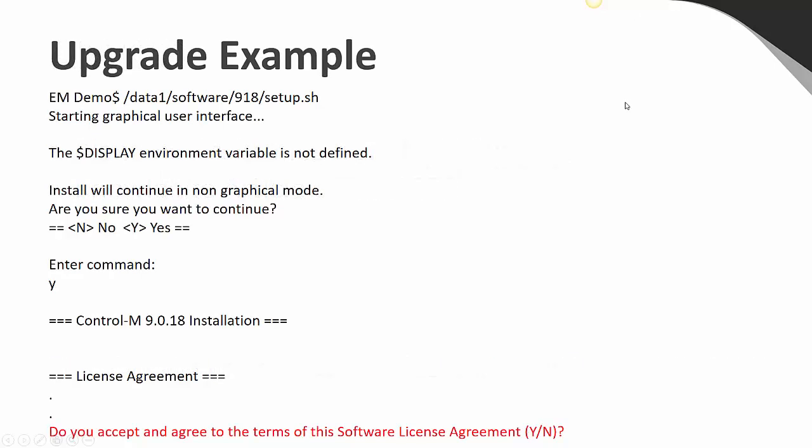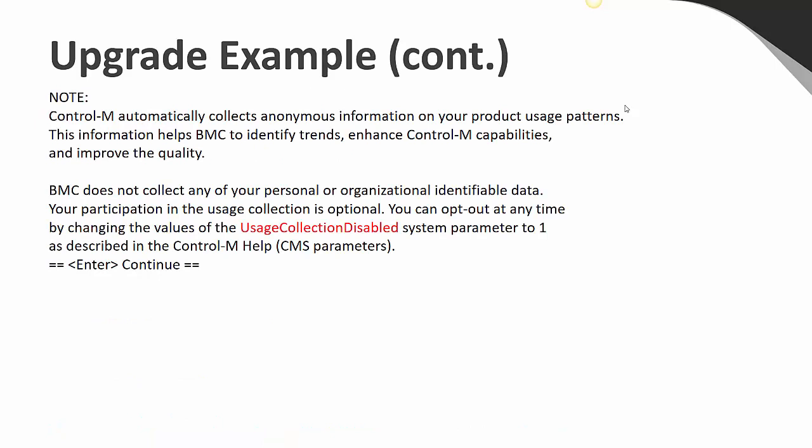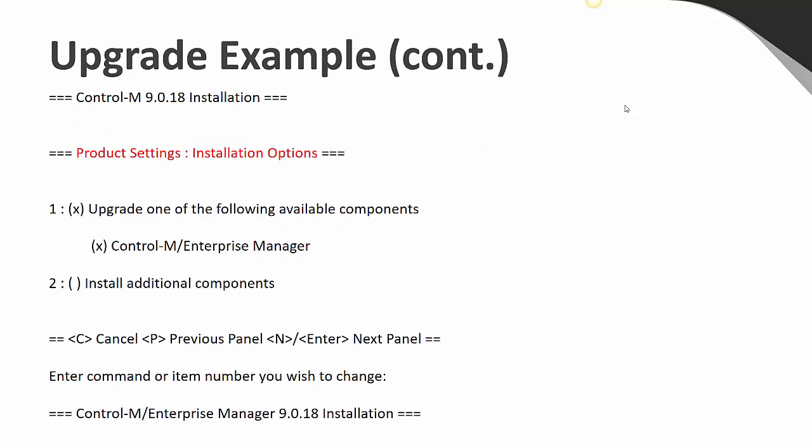Looking at an example 9.18 upgrade on a Linux system — at the moment I have not shut down any of my Enterprise Manager processes. The users are still running and working, and there is no effect to running the upgrade at this point. I've run setup.sh on Linux, so it's asking about the display. I'll use it in character mode and accept the license agreement. One thing that's new with 9.18 is some usage information that will be collected by default. If you want to turn this off, it gives you information about the parameter you can set to disable that capability.